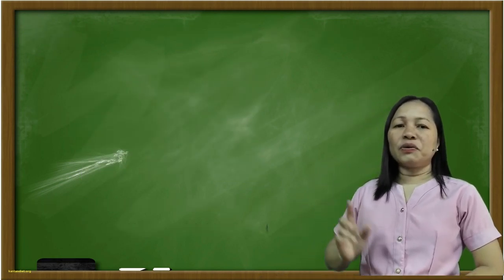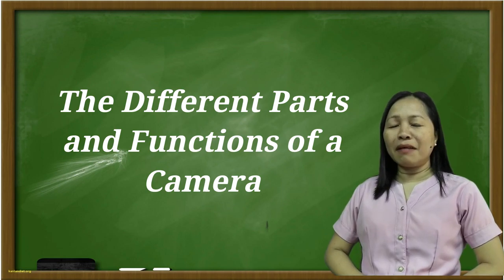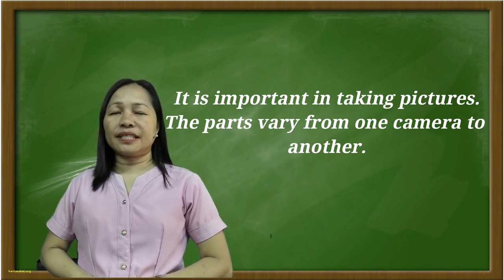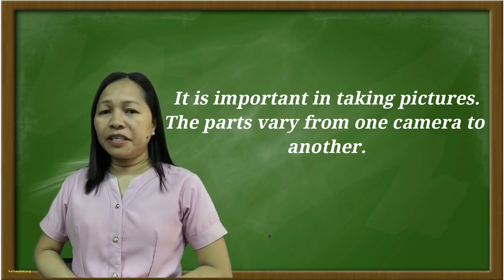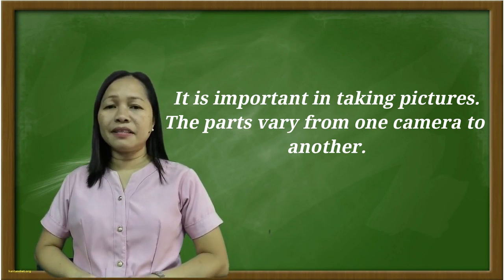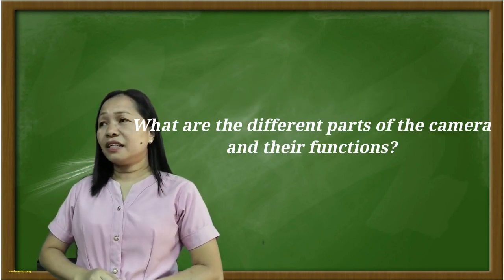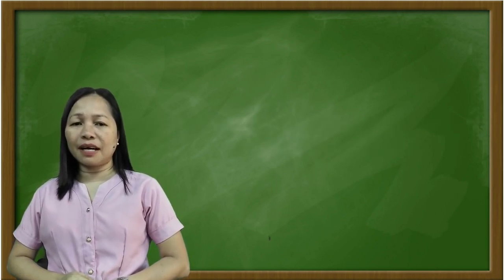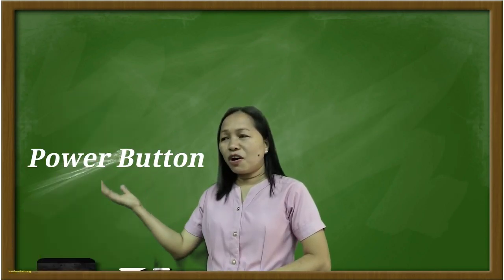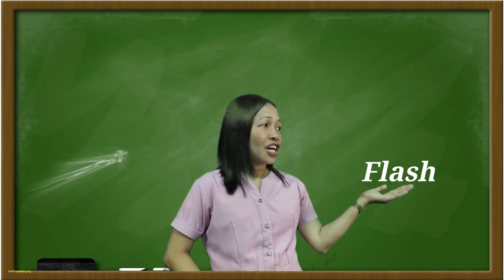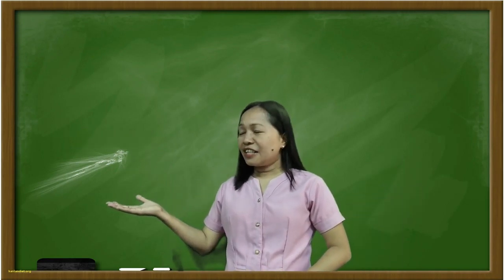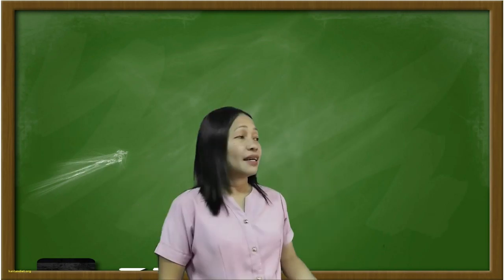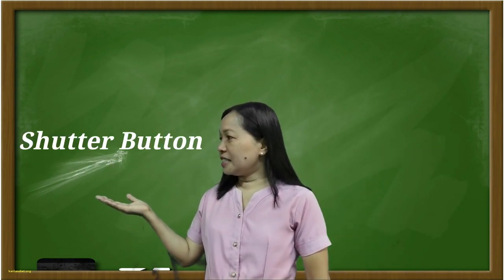You need to know the different parts of a camera and their functions. It is important in taking pictures. The parts vary from one camera to another. What are the different parts of a camera and their functions? So here are the parts of a camera: power button, flash, lens, memory card slot, monitor screen, battery chamber, and shutter button.